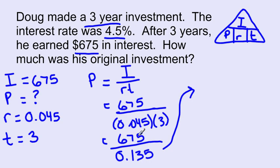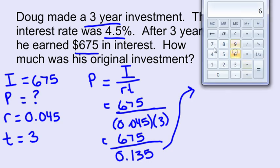And now finally I can punch this in. I'm going to have 675 divided by 0.135. It's going to give me an even 5,000.